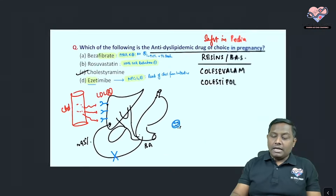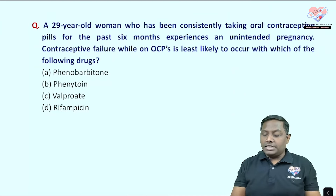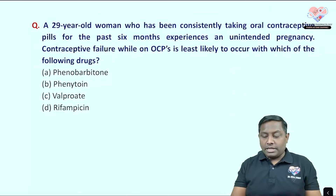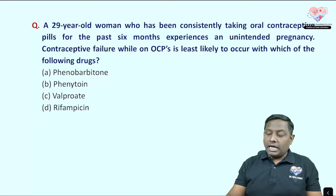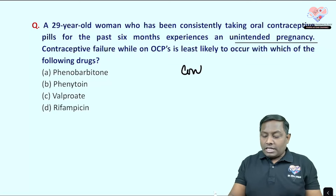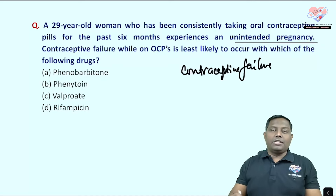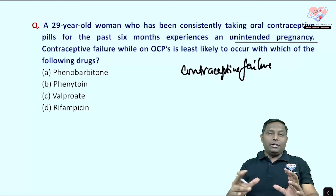The next question involves a 29-year-old woman consistently taking oral contraceptive pills for six months who experiences an unintended pregnancy. This is a case of contraceptive failure.